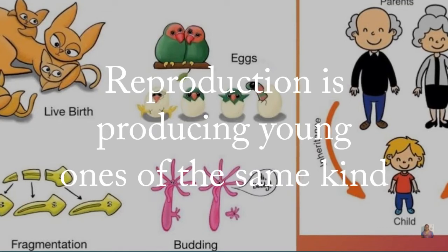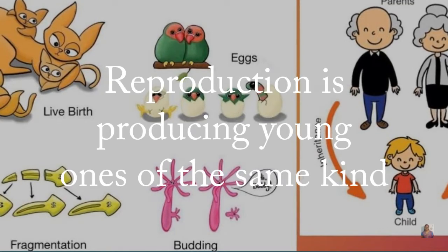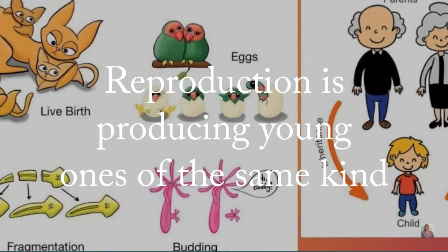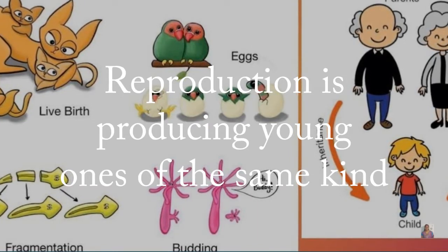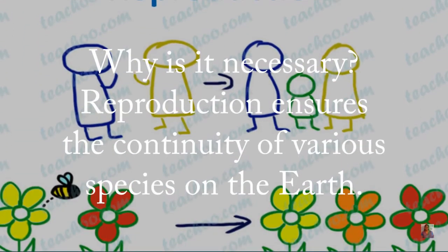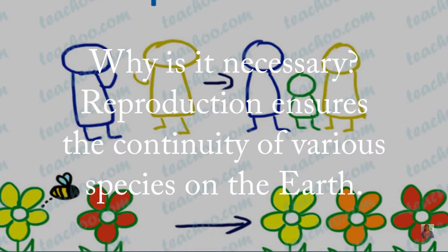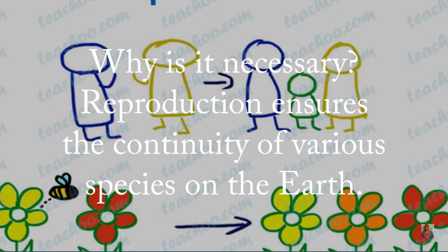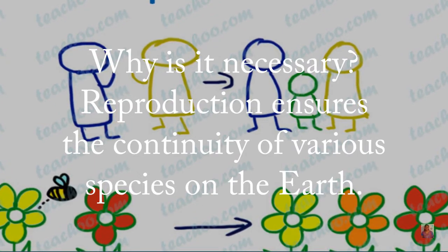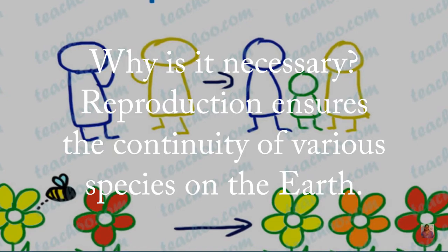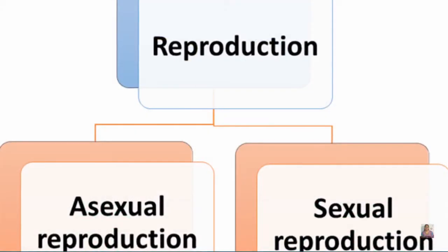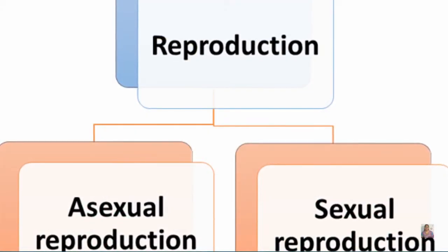Dear students, first let us understand what exactly is reproduction. Reproduction is nothing but producing young ones of the same kind. First you need to understand why reproduction is necessary. It is necessary because it ensures the continuity of various species on the earth. Otherwise life on earth is not possible.